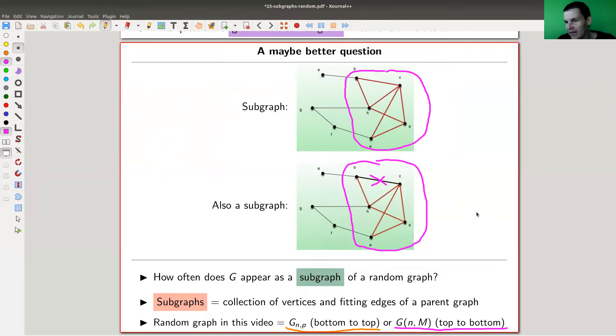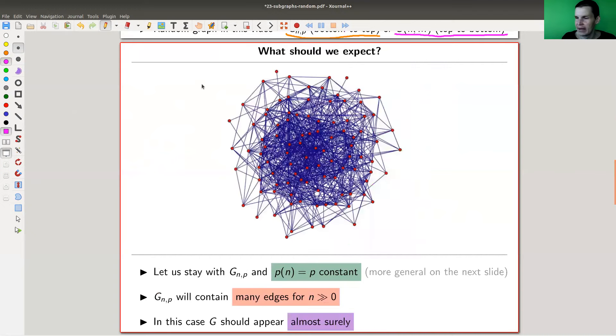And I would just ask the question: how likely does G appear? How often does G appear? And that's certainly a better type of question than is it a random graph itself. It's kind of the same type of question if you think about it, but it's still a somewhat better question. What should we expect?